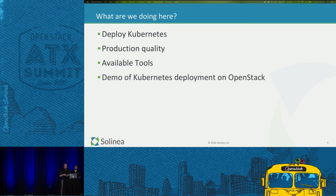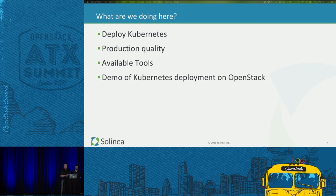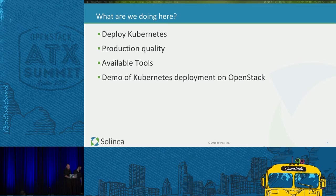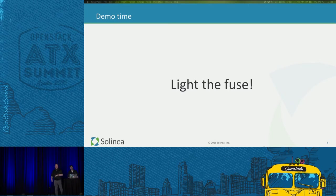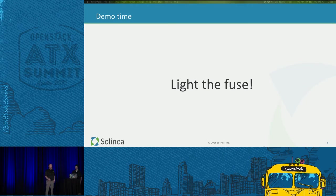Today we're going to look at some of the options for deploying Kubernetes, the production quality of these solutions when looking at deploying on top of OpenStack. We're going to look at available tools, including tools outside of the normal contrib repos within Kubernetes. And then we're going to do a demo of the Kubernetes deployment on OpenStack that's going to work flawlessly, according to Spencer. I'm going to hand it over to Spencer.